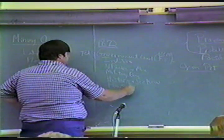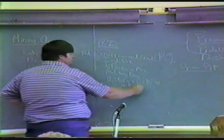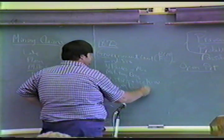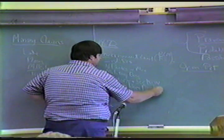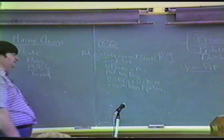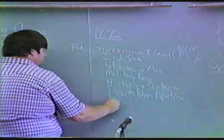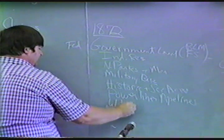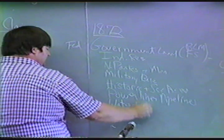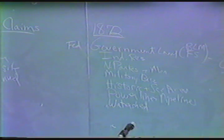Power lines, pipelines — they're crossing urban land and they don't want you mining under their pipelines. So, watersheds — a good deal of the Angeles Forest here is withdrawn because it's a watershed. They don't want you to mine there because that may interrupt the flow of water into the basin.